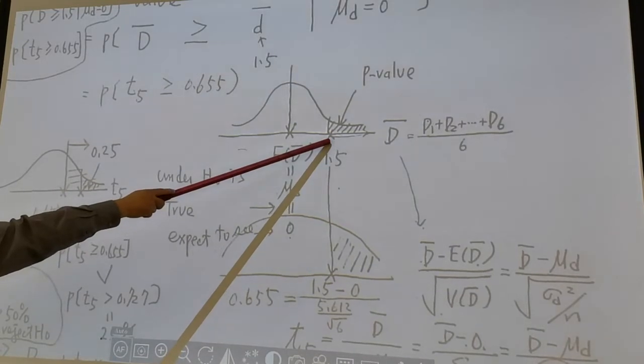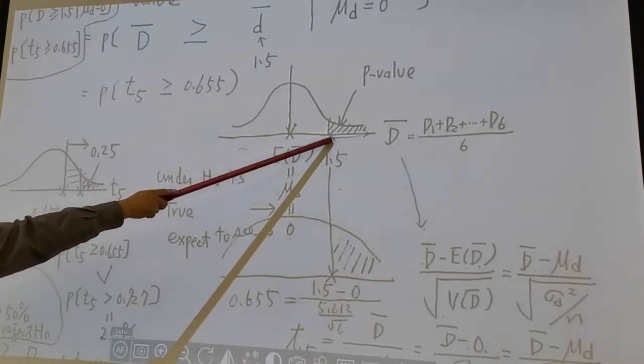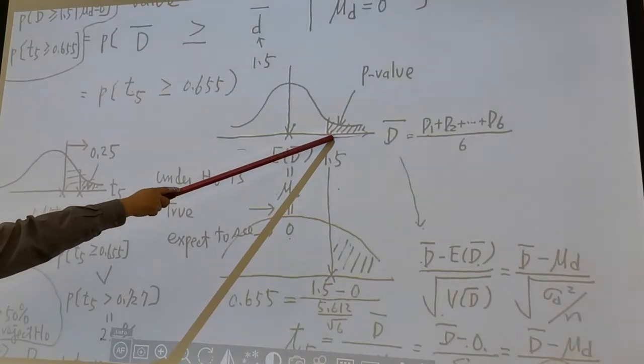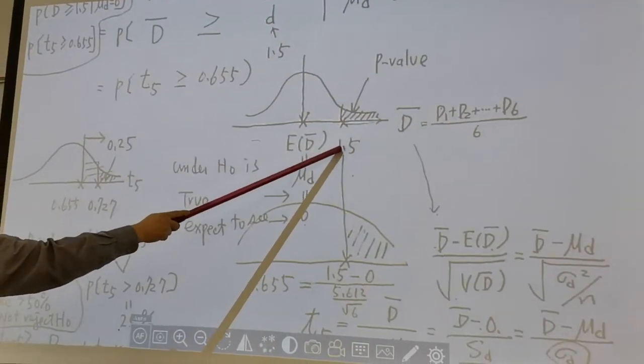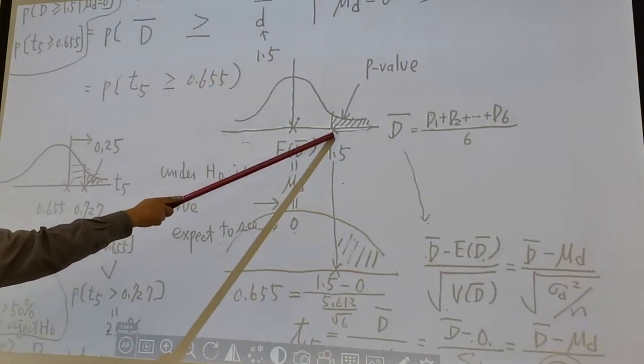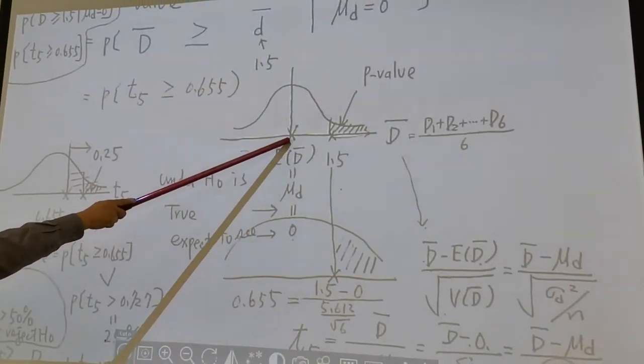We find d₁ to d₆, six middle managers, their appraisal score differences before and after. D-bar is 1.5. Under H₀ is true, what you observe should be close to what you expect.